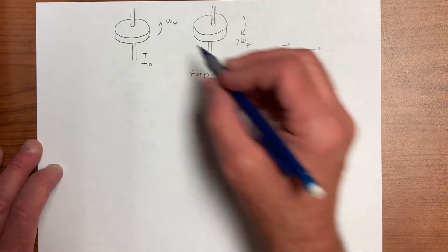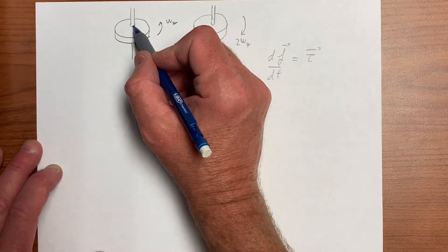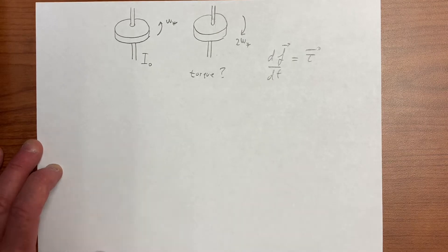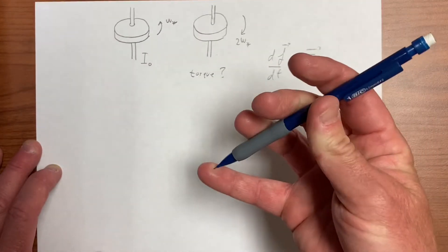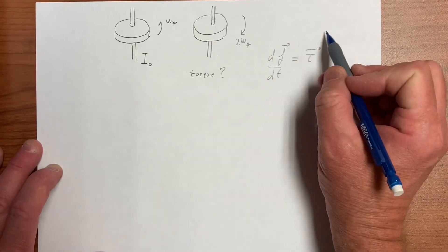But we can evaluate the angular momentum about the center of the disk. Well, we could evaluate it about some other points and conclude whether or not there's a torque about some other points.